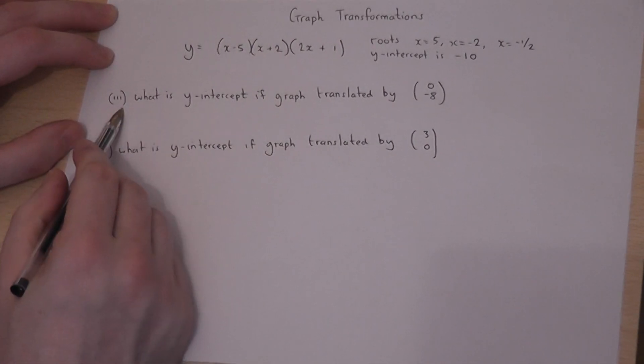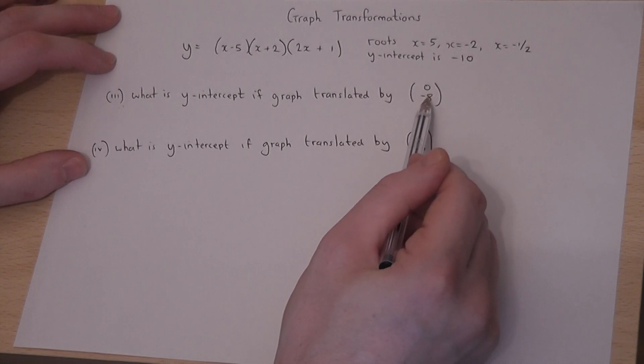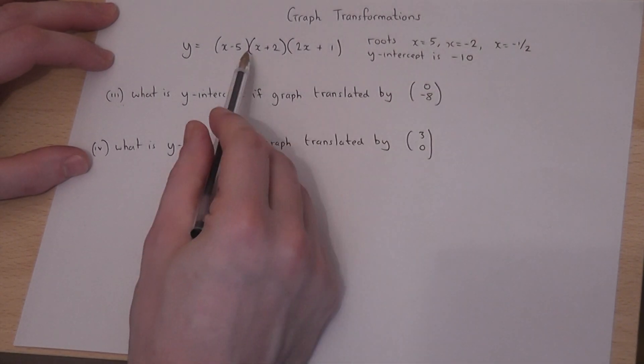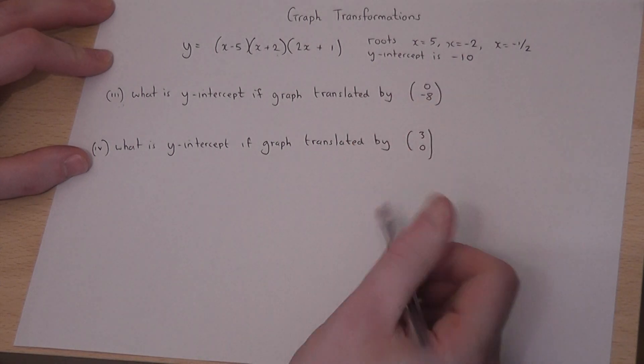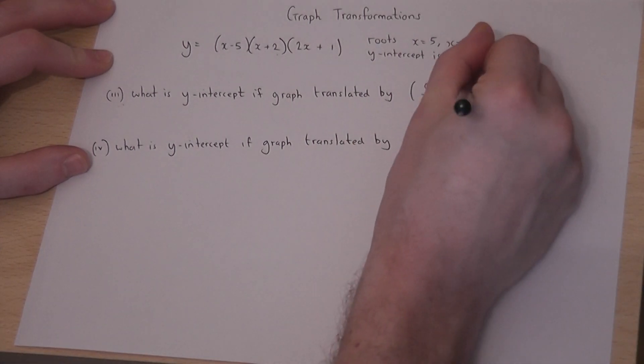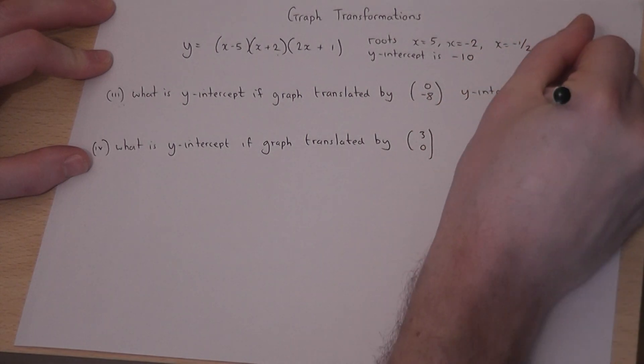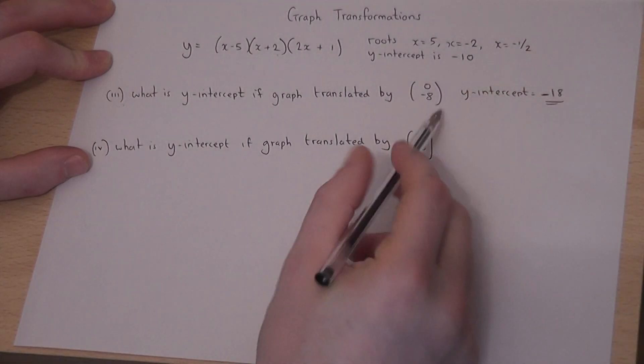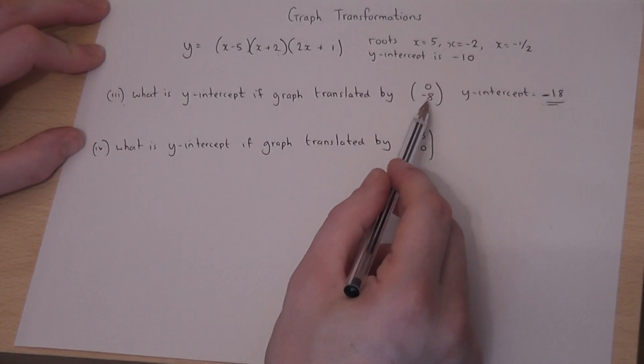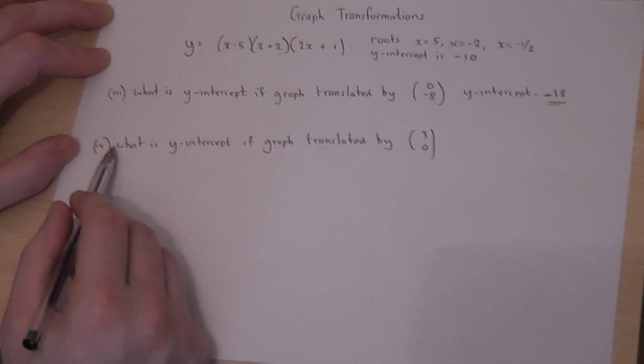Now in part 3, this means move the graph across zero and down by 8. If we move this graph down by 8, then the y-intercept will move down by 8, so the new y-intercept will be -18. If it was -10 and moved down by 8, it goes to -18. This is a vertical translation. The next part is more tricky.